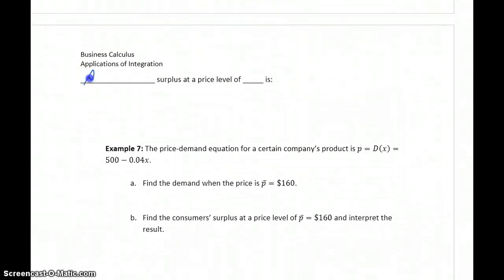Producer surplus, at a price level of P bar, so some specific given price point, can be calculated as the integral from 0 to x bar, some specific demand level that we'll need to find. We'll be integrating the function P bar minus S of x, where S of x is some given price supply equation.